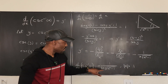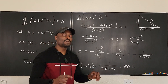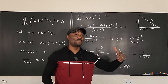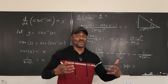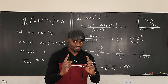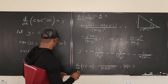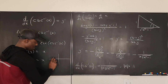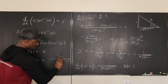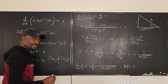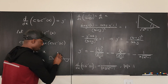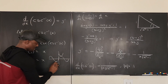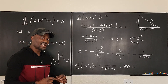Where does the absolute value come from? It comes from the nature of all inverse functions. The first few I derived didn't need explanation because those derivatives were all positive or all negative throughout. Now pay attention: the graph of sine leads to the graph of cosecant, which has vertical asymptotes and two branches.